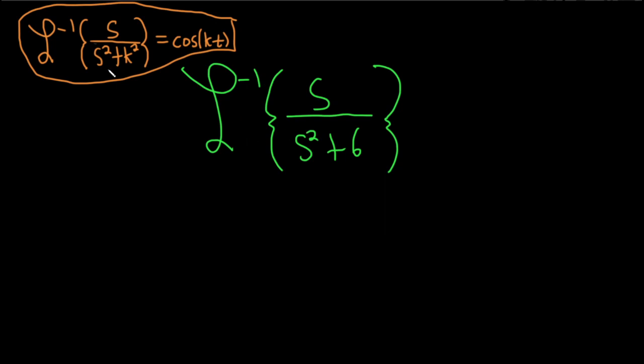Okay, so this almost matches the formula. What's really missing is this 6. What we can do is take the 6 and write it like this. We can write it as the square root of 6 squared.